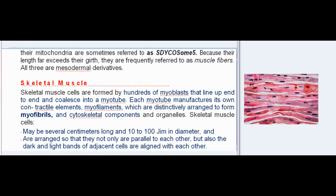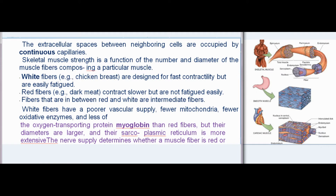Skeletal muscle cells are formed by hundreds of myoblasts that line up end to end and coalesce into a myotube. Each myotube manufactures its own contractile elements, myofilaments, which are distinctively arranged to form myofibrils, and cytoskeletal components and organelles. Skeletal muscle cells may be several centimeters long and 10 to 100 micrometers in diameter, arranged parallel to each other with dark and light bands of adjacent cells aligned. The extracellular spaces between neighboring cells are occupied by continuous capillaries.